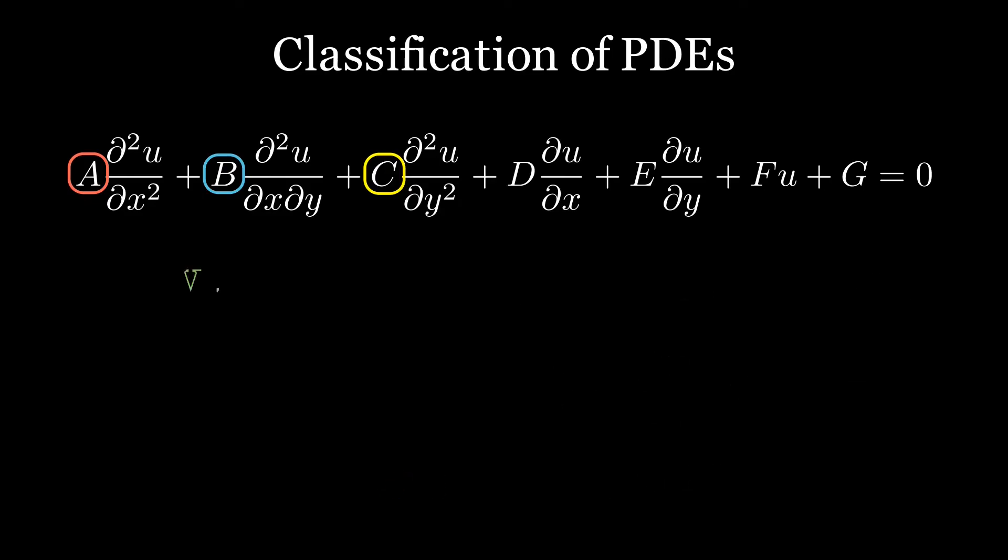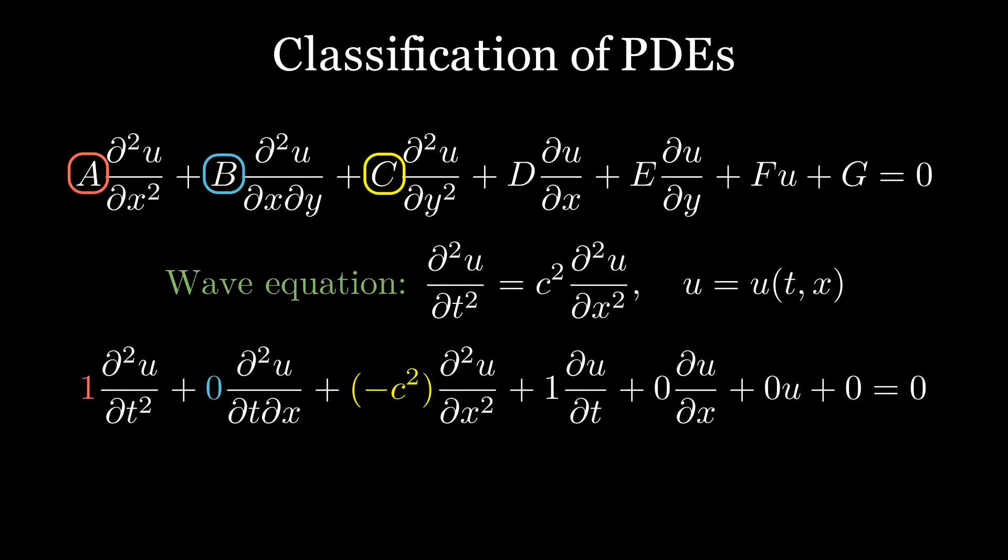The last example is the wave propagation equation, in which U is a function of time and space, similar to the heat equation. Again, we rearrange the terms and compare them to the general form. With A being non-zero this time and C being a negative value, B squared minus 4AC is positive, telling us that the equation is a hyperbolic PDE.